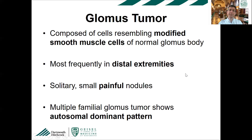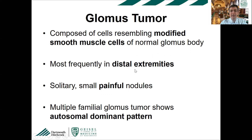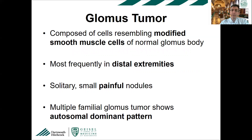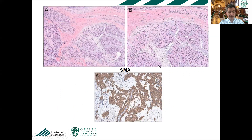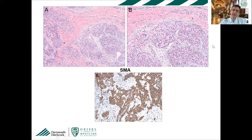Moving to epithelioid vascular tumors: one tumor that raises the differential of epithelioid tumors in the skin is glomus tumor, composed of modified smooth muscle cells of the normal glomus body. It frequently occurs in the distal extremities and can be solitary and painful. There are familial syndromes — multiple familial glomus tumor syndrome — with an autosomal dominant pattern. Classically it shows a perivascular proliferation of homogeneous round to ovoid nuclei with multicellular layers, diffuse positivity for SMA, and diffuse positivity for collagen IV highlighting the basement membrane.